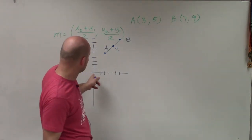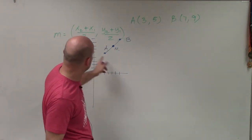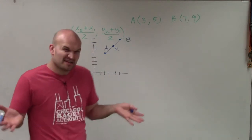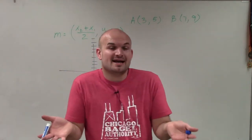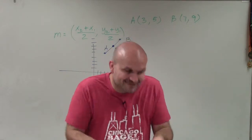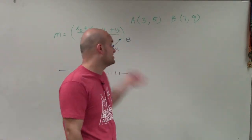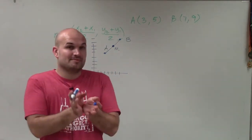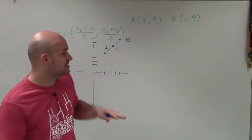And I could probably estimate that looks like 1, 2, 3, 4, 5. 1, 2, 3, 4, 5, 6, right? It looks like 5, 6. But let's go ahead and actually use our formula to find the exact value. Because not always is the midpoint going to be an exact coordinate point that we can just estimate in there.